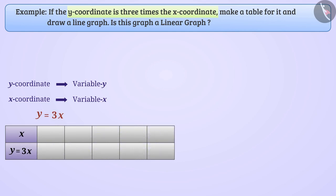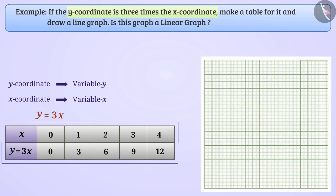If we take the value of x as 0, then the value of y will be 3 × 0 = 0. If we take the value of x as 1, then y = 3 × 1 = 3. Similarly, if x is 2, then y = 3 × 2 = 6. We will find the value of y for different values of x and then draw a graph using this table.